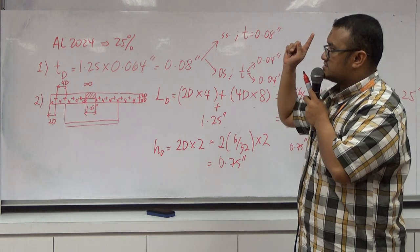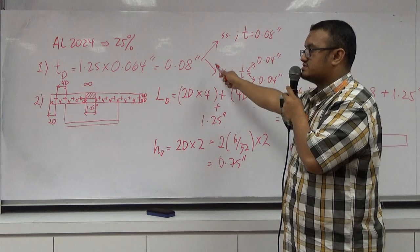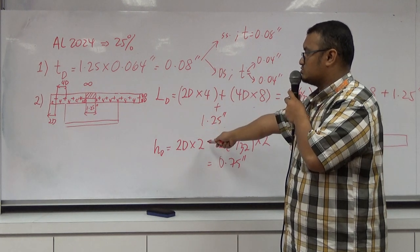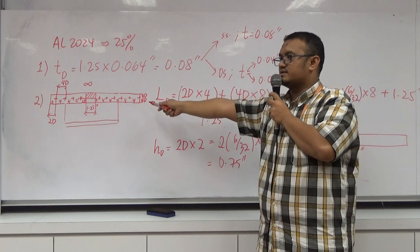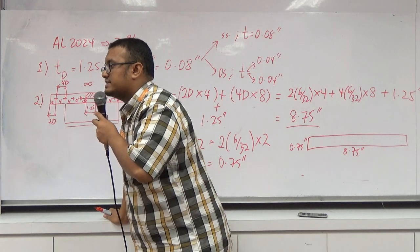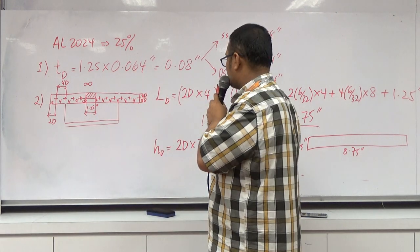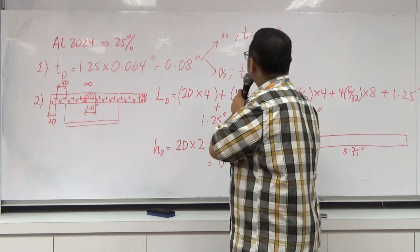So that is thickness to restore back the stiffness. This one is to allocate the fastener. Hold margin, edge margin. Now, reserve factor.